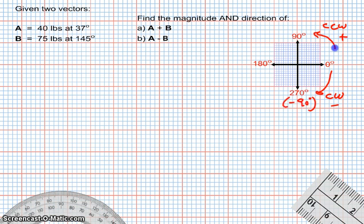So I've got two vectors. I've got 40 pounds at 37 degrees and 75 pounds at 145. So based on that, I have one vector pointed like that, and another vector pointed something like that, a little bit longer, pointed at 145 degrees. That's the rough idea, and we're going to add them together.